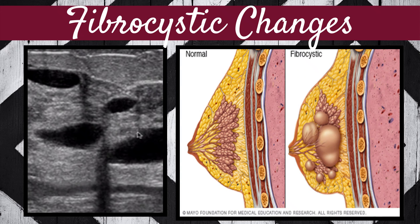The ultrasound image on this slide represents the classic appearance of fibrocystic changes: multiple cysts of varying size and varying complexity visualized within the breast tissue. The other image is a schematic from the Mayo Foundation for Medical Education and Research, demonstrating the normal breast with its ducts and lobules compared to the fibrocystic breast, where lobules are enlarging and producing multiple cysts of varying size throughout the tissue.